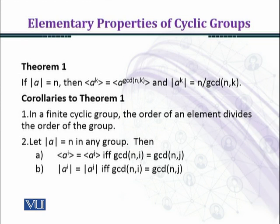Then cyclic group generated by a^i equals cyclic group generated by a^j if and only if gcd(n,i) equals gcd(n,j). Part b is: order of a^i equals order of a^j if and only if gcd(n,i) equals gcd(n,j).